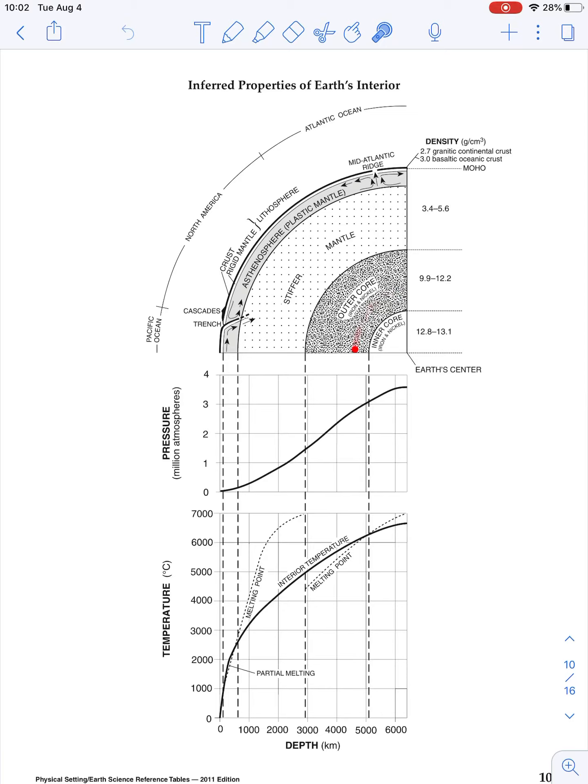And deep in the center of Earth, we have our inner core, followed by the outer core, stiffer mantle, the asthenosphere, which is our plastic mantle.